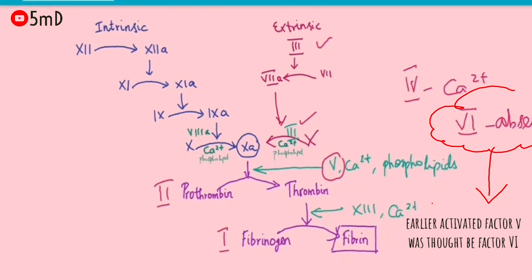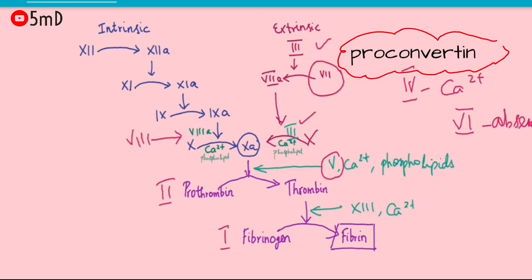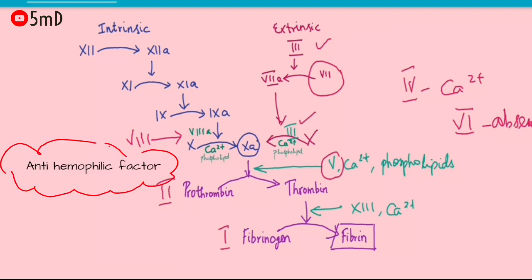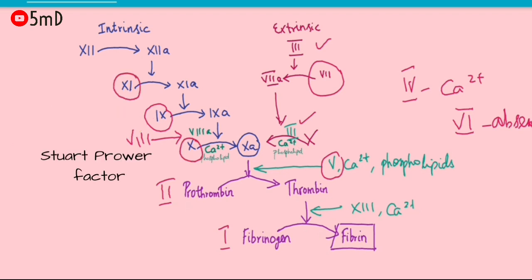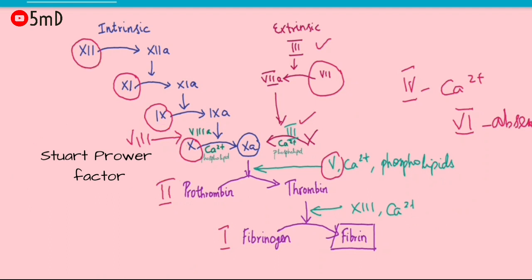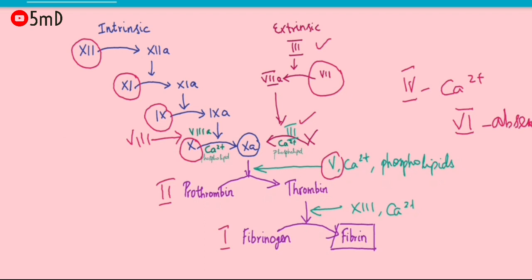Factor 7 is pro-convertin or auto-prothrombin, which helps in the activation of prothrombin. Factor 8 is the anti-hemophilic factor. Factor 9 is also known as the Christmas factor or plasma thromboplastin component. Factor 10 is the Stuart-Prower factor, which is the common factor to both the extrinsic and intrinsic pathways. Factor 11 is plasma thromboplastin antecedent.